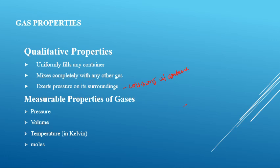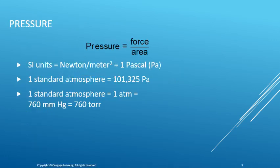We focused on four measurable properties of gases in our activity. We looked at the changes in pressure, volume, temperature, and the number of moles. We'll begin looking at the variables that affect gases with pressure. Pressure is defined as the amount of force per unit area. It's based on the number of collisions that are taking place with the container walls.